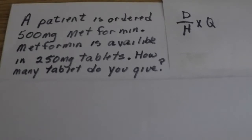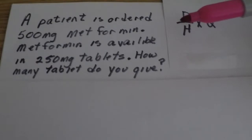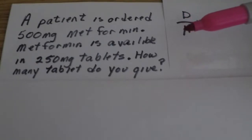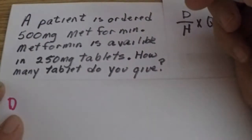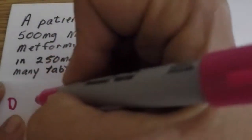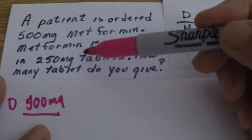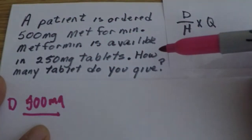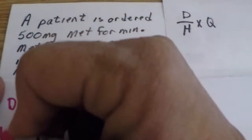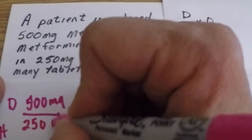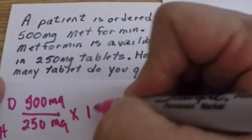Don't make these hard — they're not hard. A patient has ordered 500 milligrams of Metformin. Metformin is available in 250 milligram tablets. How many tablets do you give? Let's plug our numbers in. Our desired is the doctor's ordered 500 milligrams, so our desired is 500 milligrams. Metformin is available as 250 milligrams per one tablet.